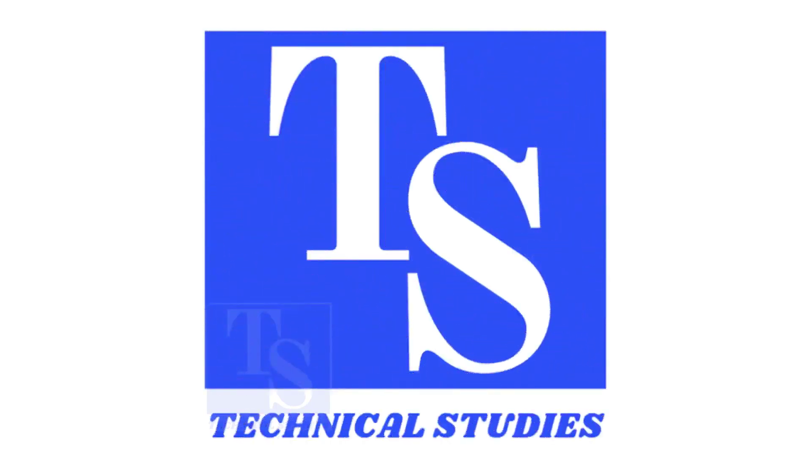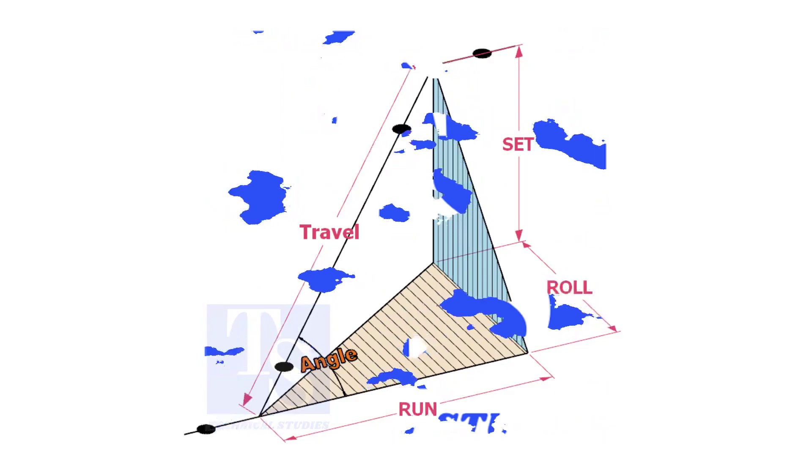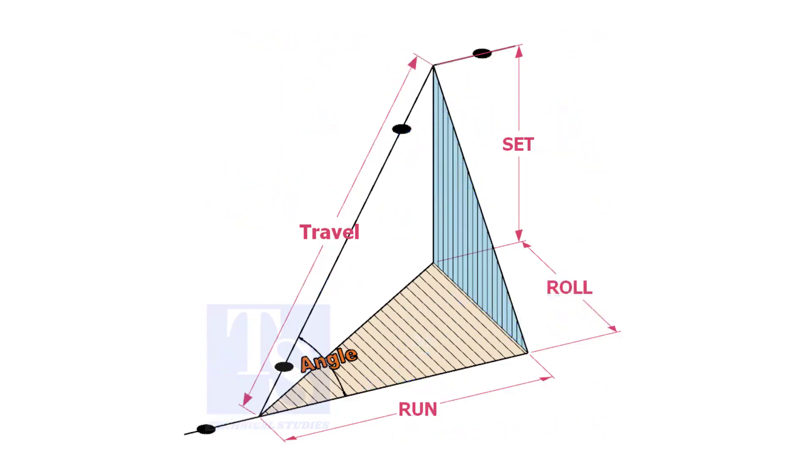Welcome to Technical Studies. In a piping drawing of a double rolled offset, usually the dimensions of the run, set, and roll are given.